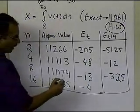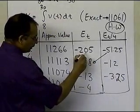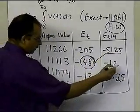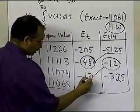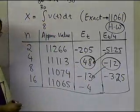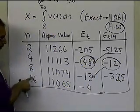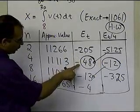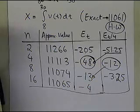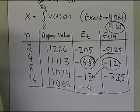Looking at the numbers: quartering the error for n = 2 gives minus 51.25, which is very close to minus 48 (the true error for n = 4). Quartering minus 48 gives minus 12, which matches the true error for n = 8. So as you double the number of segments, the true error gets almost quartered. It doesn't get exactly quartered because the second derivative average term in the formula is not exactly constant.